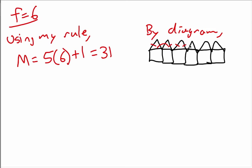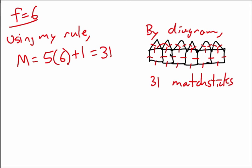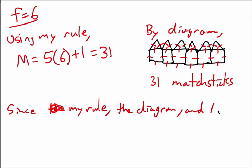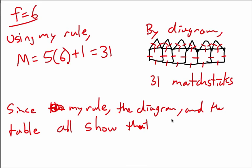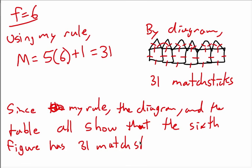Counting the matchsticks in the sixth diagram: one through thirty-one — so we have thirty-one matchsticks. We already saw thirty-one predicted by the table. Since my rule, the diagram, and the table all show that the sixth figure has thirty-one matchsticks, this verifies my rule is correct.